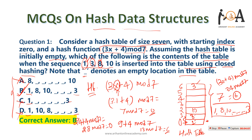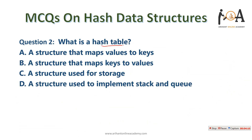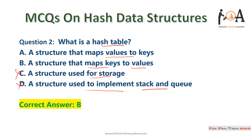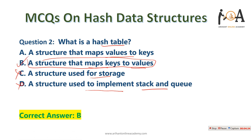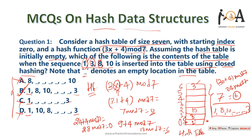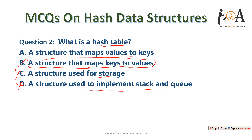The next question is: what is a hash table? Options include: a structure that maps values to keys, a structure that maps keys to values, a structure used for storage, or a structure used to implement stacks and queues. Option B is the correct answer — a hash table is a structure that maps keys to values, as we saw in the previous question.